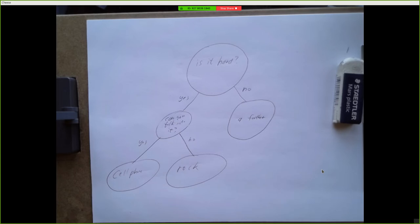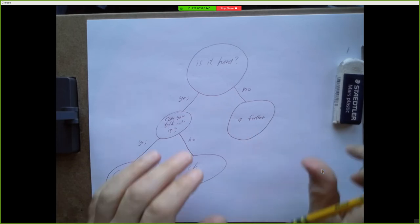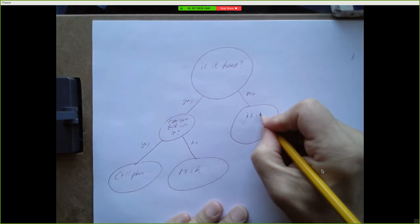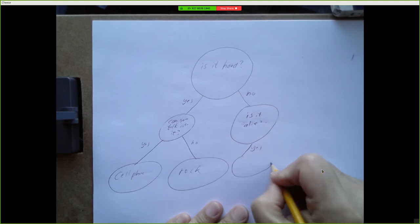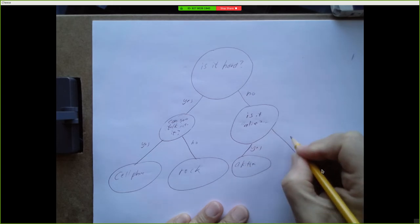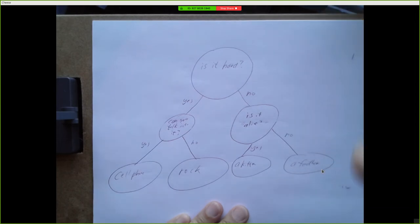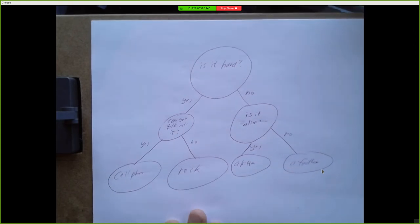Let's say you're thinking of a kitten. 'Is it hard? No. Is it a feather? No. What's a question that would differentiate a kitten from a feather?' — 'Is it alive?' So that answer node becomes a question node: 'Is it alive?' Yes leads to kitten and no leads to feather. The more you play and the more different things you challenge it with, the more this tree will grow, and in theory the better it gets at guessing.